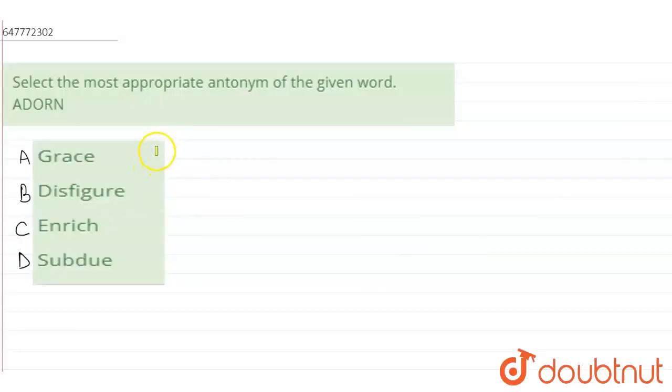Hello everyone, the question says select the most appropriate antonym of the given word. Antonym means opposite meaning, and the given word is adorn. The given options are A, grace, B, disfigure, C, enrich, or D, subdue.